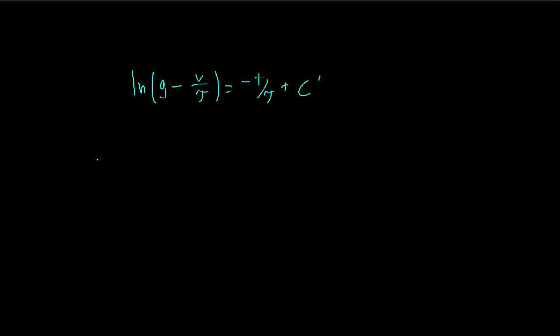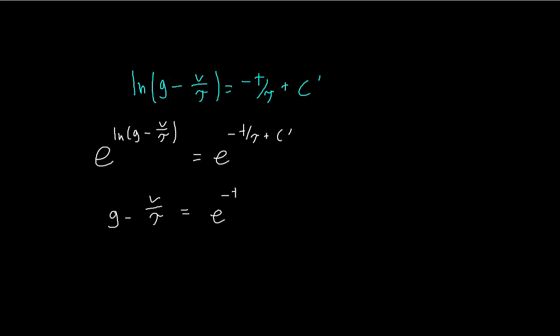Next, we exponentiate both sides — taking e to the power of both sides. Since e to the ln of anything is just that something, the left side simplifies. When two things are added in the exponent, we split it as multiplication. Since e to the c is just a constant, we rename it c double-prime.